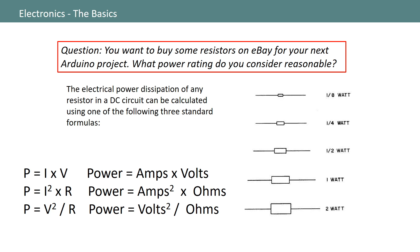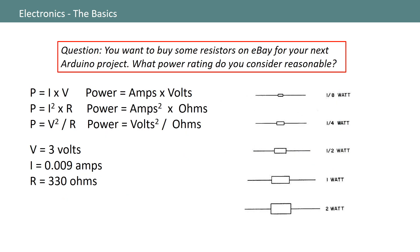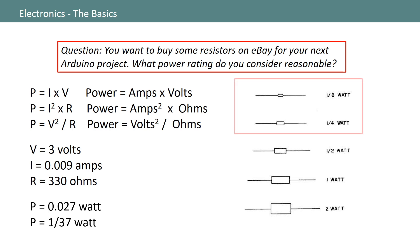To demonstrate this, let's revisit an example from a prior chapter. In this circuit, I know my resistor will drop 3 volts with a current flow of 9 milliamps. Plugging in the numbers for current and resistance into one of my power equations, I can see that the power dissipation will be about 1/37th of a watt through my resistor. This is much smaller than 1/8 of a watt, so a resistor with the smallest power rating would work fine, but I might want to purchase the next size up just to give my project a little bit of headroom.